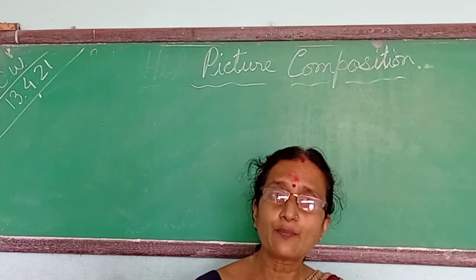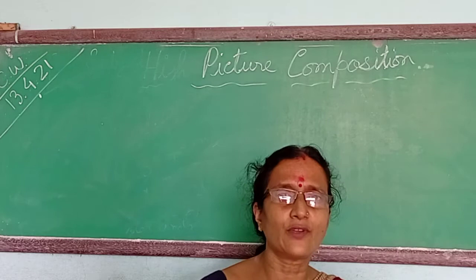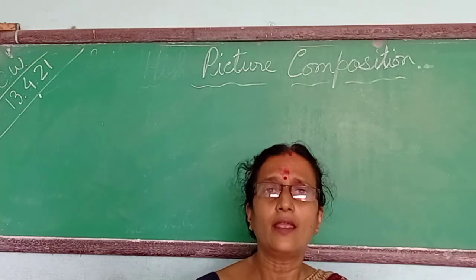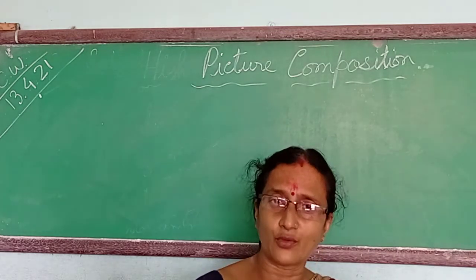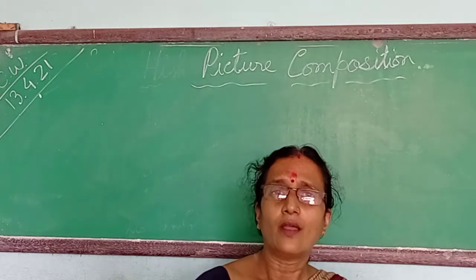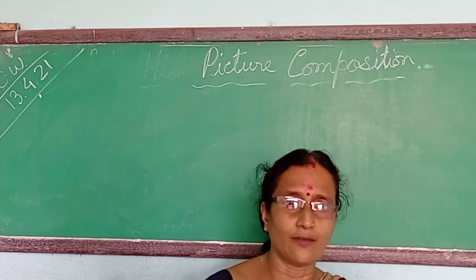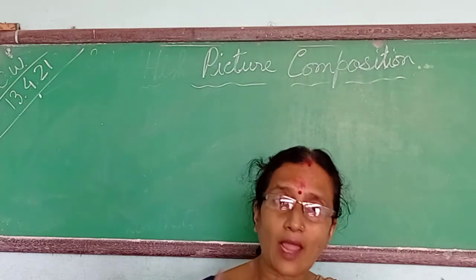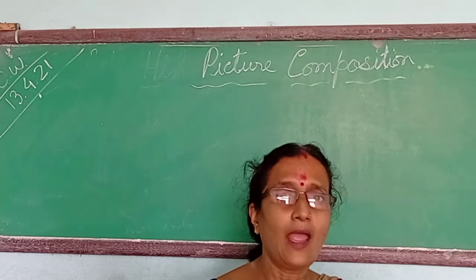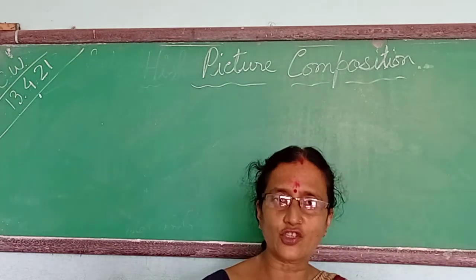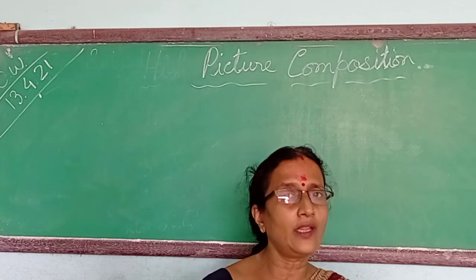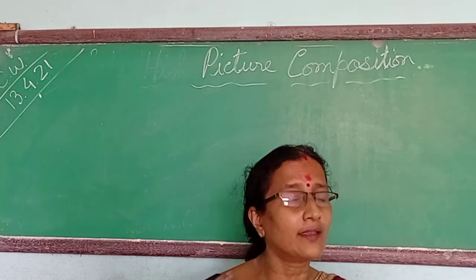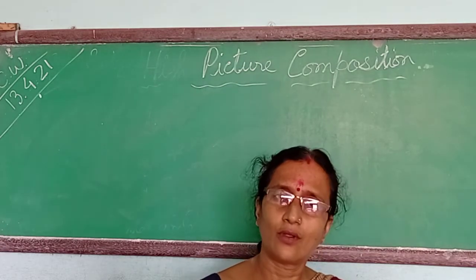What is the difference between a composition and a picture composition? In a picture composition, a picture is given and you have to describe the picture. In a composition, you only have to write sentences — what you are thinking about it.